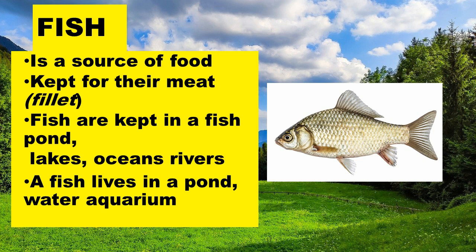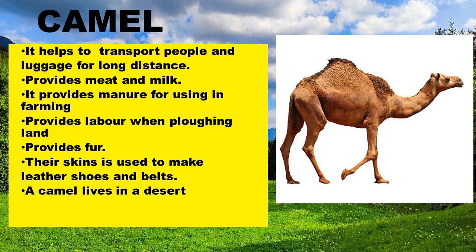Let's look at the camel. What do we get from a camel? A camel helps to transport people and luggage for long distances. It provides meat and milk, and provides manure for use in farming. It also provides labor when plowing land. The camel's skin is used for making leather shoes and belts. A camel lives in the desert.